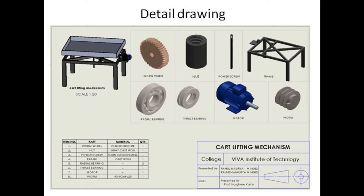Here is the assembly drawing of cart lifting mechanism, which includes worm wheel, nut, power screw, frame, radial bearing, thrust bearing, motor, and worm.